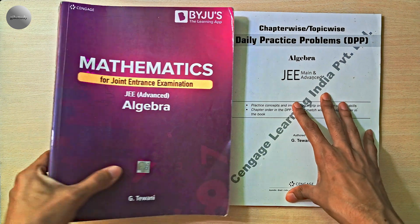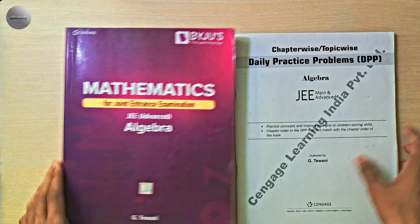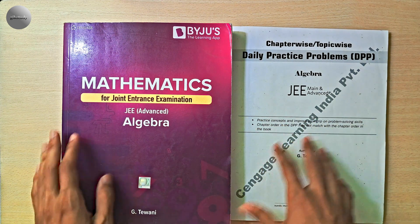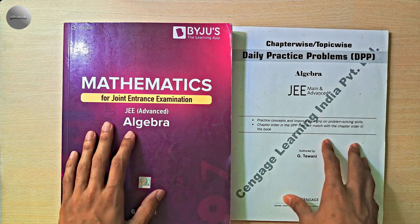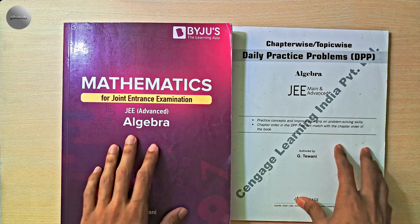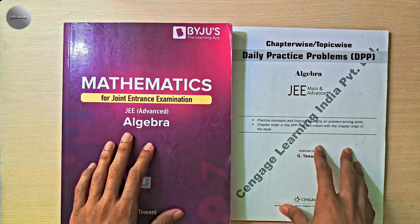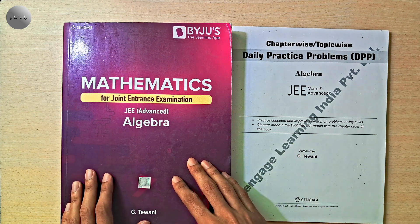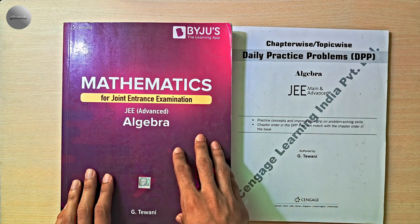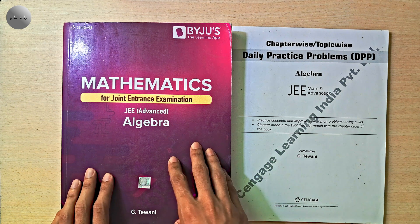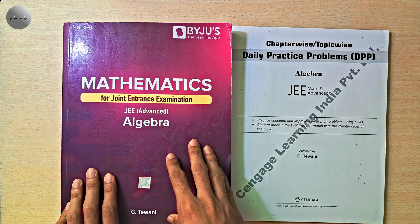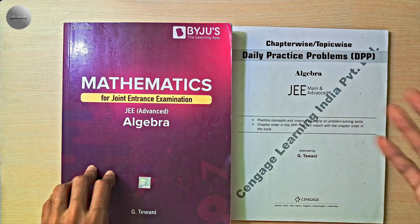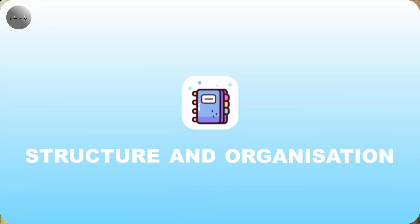This is the book of Cengage Algebra, and this is the DPP. Cengage Algebra, authored by G. Tiwari, is part of the popular Cengage mathematics series. It's built to take students from basic concepts to advanced JEE problems all in one place. This book contains detailed theory, solved examples, and a wide variety of practice problems designed to cover everything from fundamental to the toughest questions in JEE Advanced. Also, this DPP is for practice purpose — here you get mains level and advanced level questions for daily practice.